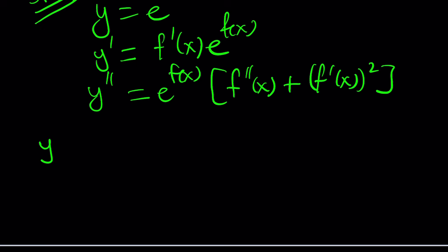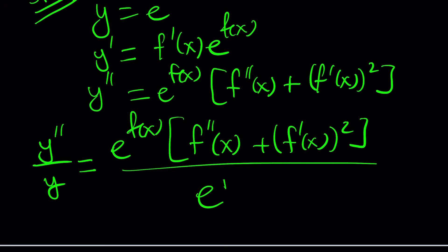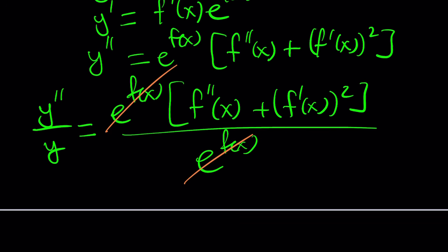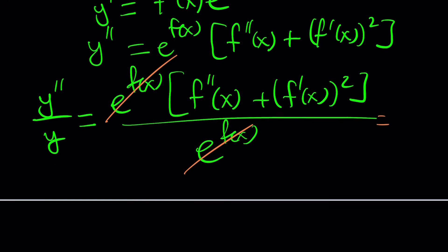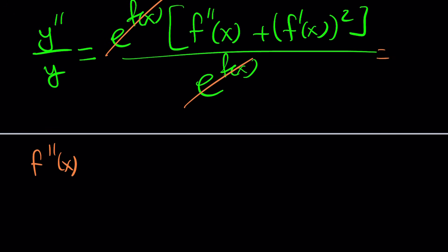Because again, we use the product rule, the chain rule, and all the rules that apply. Now here's what we're going to do. We're going to go ahead and divide y double prime by y. That's going to cancel out some of the terms, leaving us with an easier differential equation. Hopefully, that's wishful thinking. Now we're going to go ahead and divide this by y, which is e to the power f of x. And as you can see here, e to the power f of x cancels out. Super duper nice. Now, we ended up with something like this, but wait a minute.